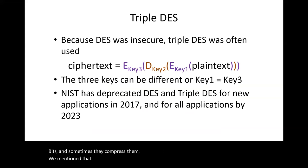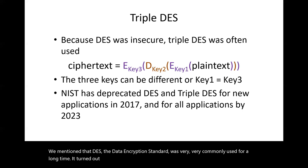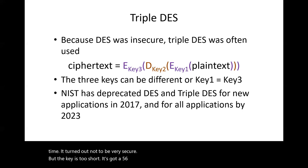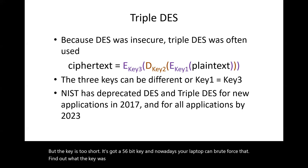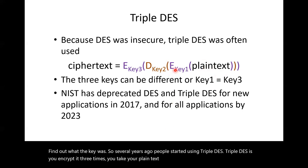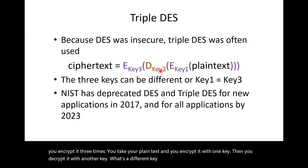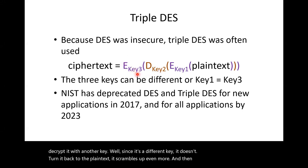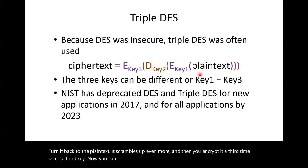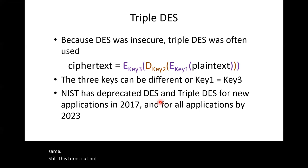DES — the Data Encryption Standard — was very commonly used for a long time, but turned out not to be very secure because the key is too short: it's a 56-bit key. Nowadays your laptop can brute-force that to find out what the key was. So several years ago, people started using Triple DES — you encrypt it three times. You encrypt with one key, then decrypt with another key (which, since it's a different key, scrambles it up further), then encrypt it a third time with a third key. You can use three different keys, or key one and key three can be the same. Still, this turns out not to be very good, and all applications should stop using Triple DES.